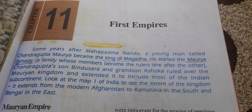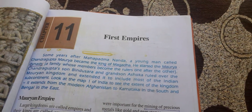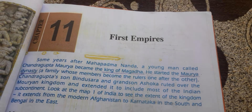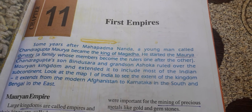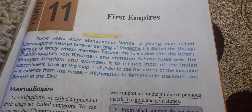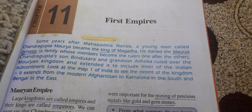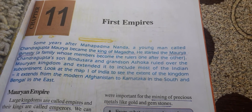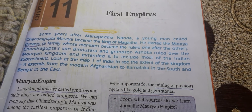Good morning students. Yesterday we started the new lesson on First Empires. In this lesson we discussed about the Mauryan dynasty or Empire. An Empire means a large kingdom, and the large kings who ruled large kingdoms are called Emperors. In the Mauryan Empire, the major kings were Chandragupta Maurya and Ashoka. Ashoka was one of the most unique and famous rulers in our country.